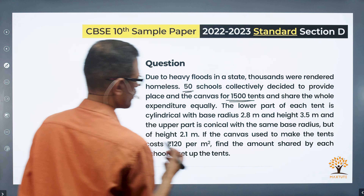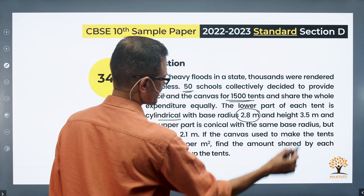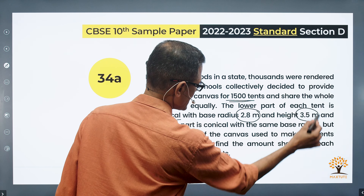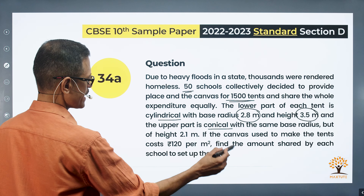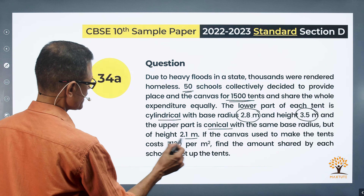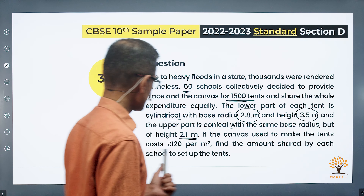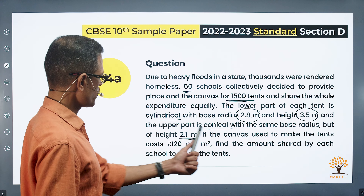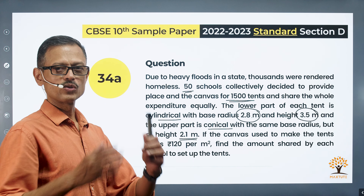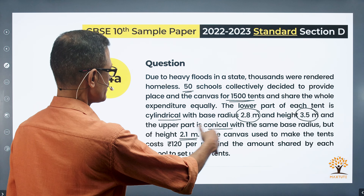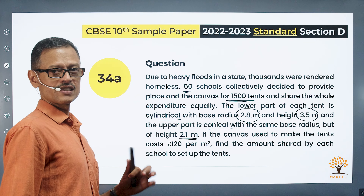The lower part of each tent is cylindrical with base radius 2.8 meters and height 3.5 meters. The upper part is conical with the same base radius of 2.8 meters but height equal to 2.1 meters. The canvas used to make the tents costs 120 rupees per meter square. All units are in meters, so no conversion is needed. Find the amount shared by each school to set up the tents.